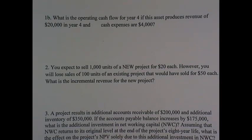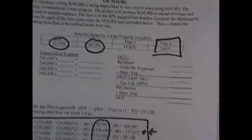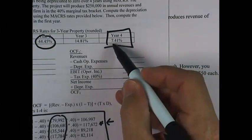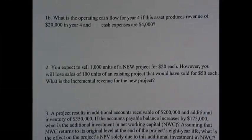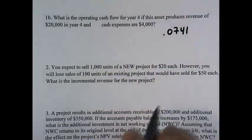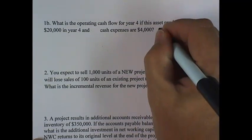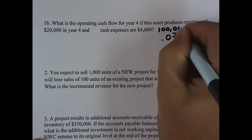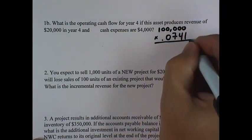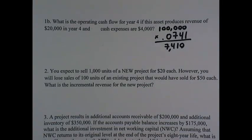In problem 1B, we're asked for the operating cash flow for year four if the asset produces revenue of $20,000 in year four and has cash expenses of $4,000. For the year four operating cash flow we'll need the year four MACRS factor which is 7.41%. So the depreciation expense for year four is $7,410.